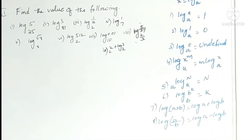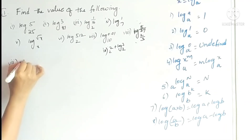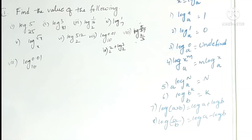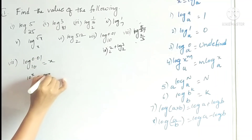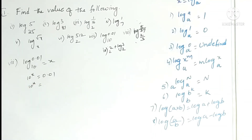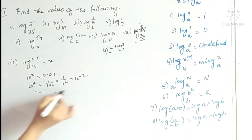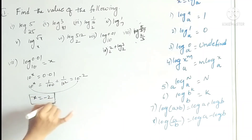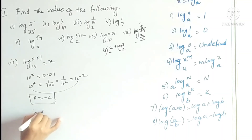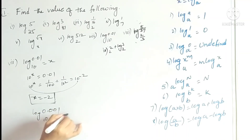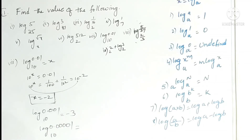The seventh problem is log 0.01 base 10. Let it be x. Exponential form: 10^x equals 0.01, which is 1/100, which is 1/10², so 10^(−2). Since bases are equal, x equals −2. Extension: log 0.001 base 10 is −3; log 0.00001 base 10 is −5.